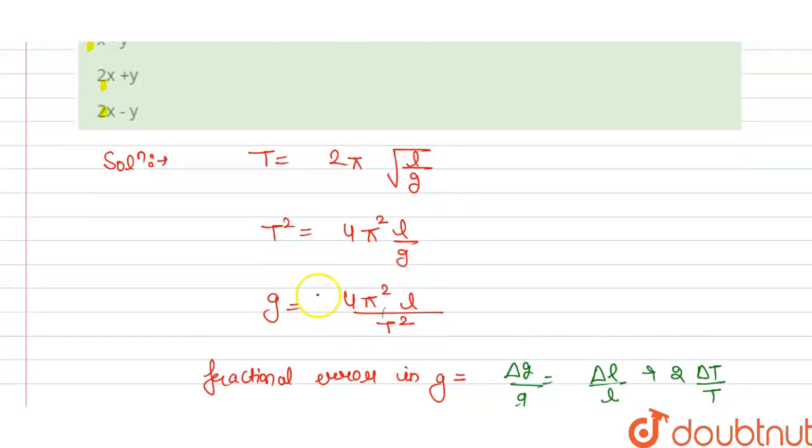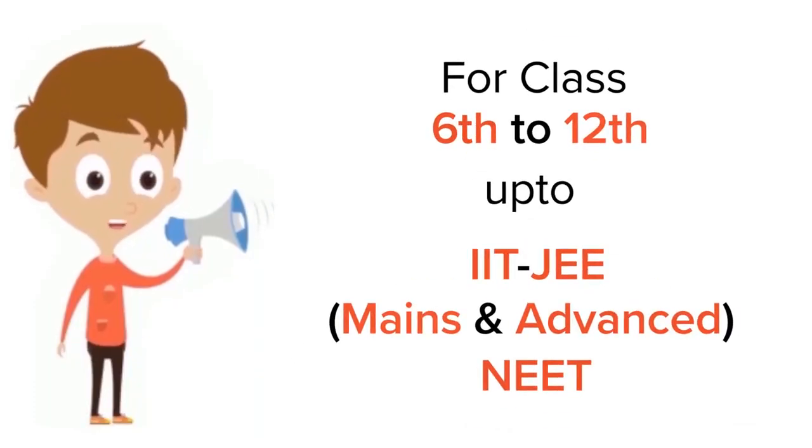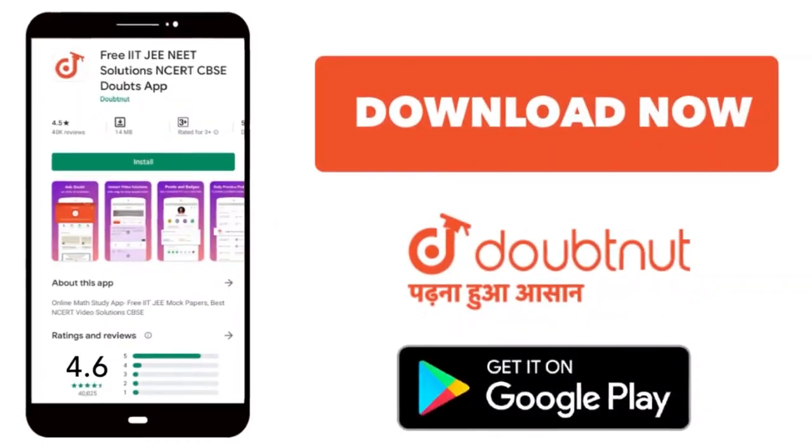Now we check which option is correct here. Our option C is correct. Thank you. For class 6 to 12, IIT-JEE and NEET level. Trusted by more than 5 crore students. Download Doubtnet app today.